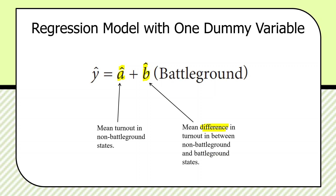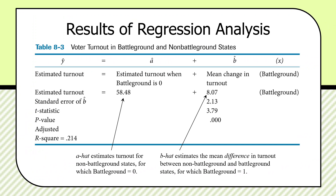Here are the estimates for the model. A-hat is 58.48 — that is the mean turnout in non-battleground states, for which the dummy variable battleground equals zero. This is the excluded or omitted category, always captured by the intercept. B-hat is 8.07 — that's the mean difference in turnout between non-battleground and battleground states. So if you switch the dummy from zero to one, you increase turnout by about eight percentage points. To derive mean turnout in battleground states, we would add 58.48 and 8.07, giving roughly 66.5%.